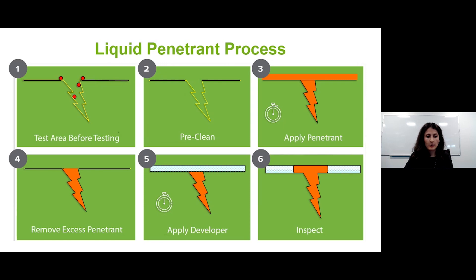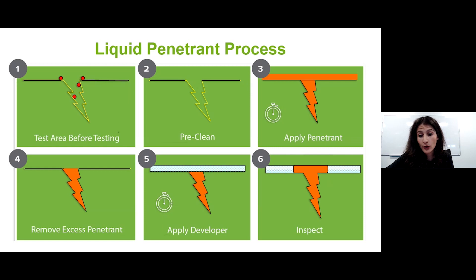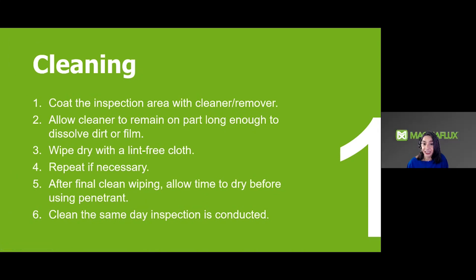Care must be taken not to overwash and remove the penetrant from possible defects. Once the part has been sufficiently dried, move on to step five: the developer. The developer is given a short time to work, drawing out the penetrant trapped in flaws to make it visible at the surface. The component can then be inspected under appropriate lighting depending on whether you are doing fluorescent or visible testing.